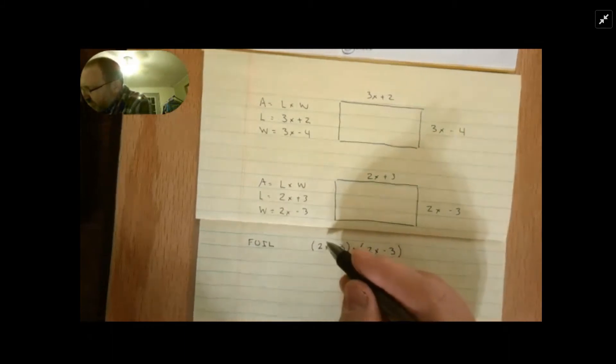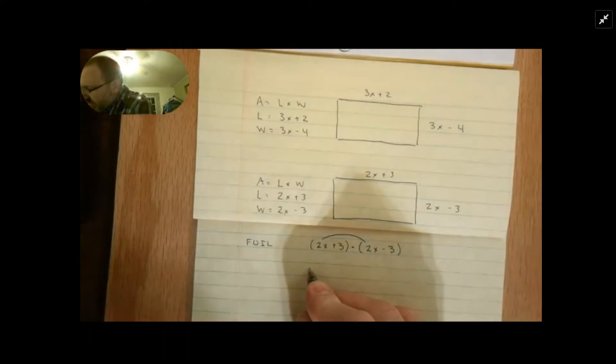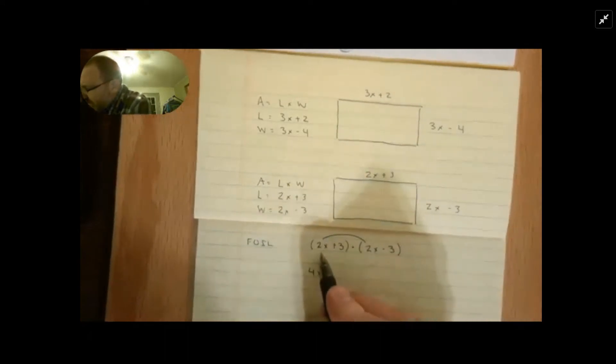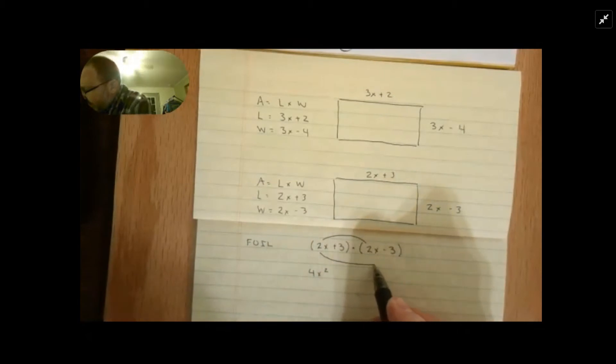FOIL simply means first times first. So 2x times 2x would be 4x squared. Outer times outer, that's the outer parts of each of our binomials. So negative 3 times 2x would be minus 6x.